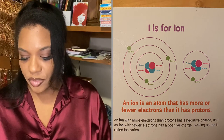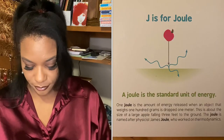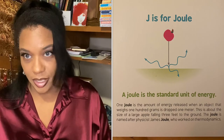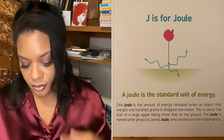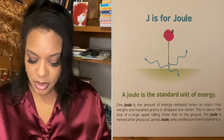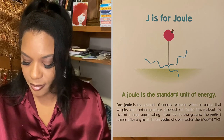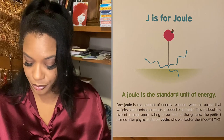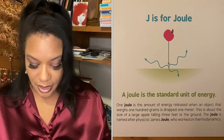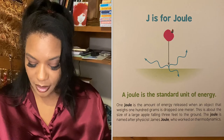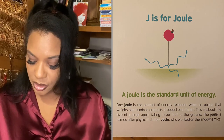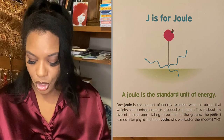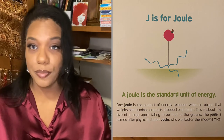J is for joule. A joule is the standard unit of energy. One joule is the amount of energy released when an object that weighs 100 grams is dropped one meter — about the size of a large apple falling three feet to the ground. The joule is named after scientist James Joule, who worked on thermodynamics.